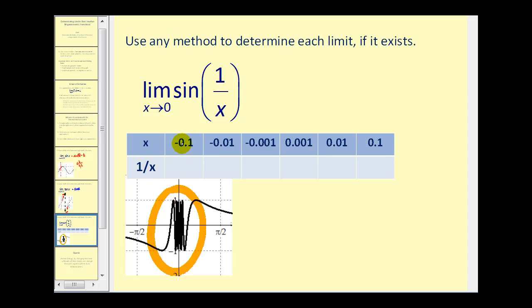If x equals negative 0.1, this is negative one tenth. One divided by negative one tenth is the same as one times negative ten over one, giving a value of negative ten. For the same reason, when x is positive 0.1, this equals ten.